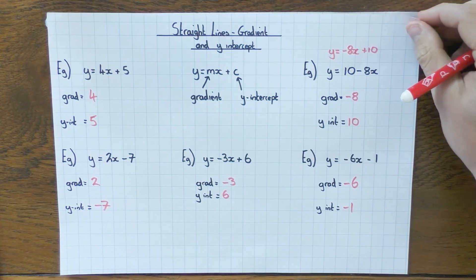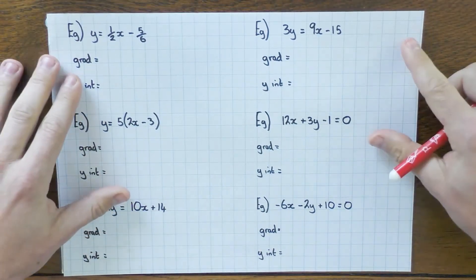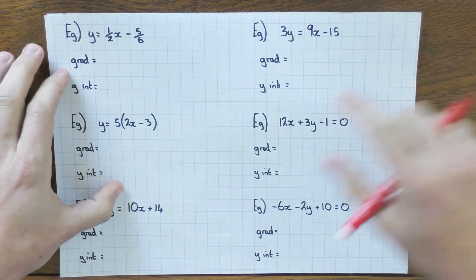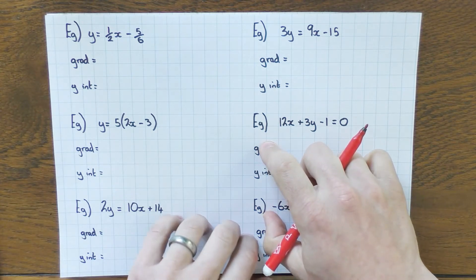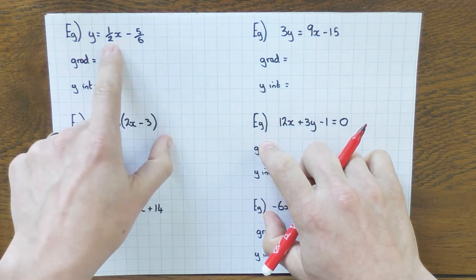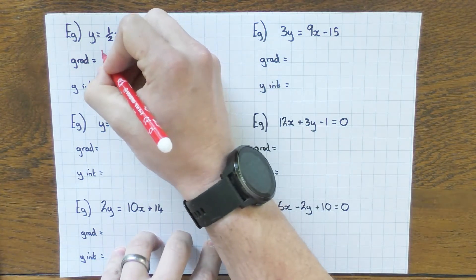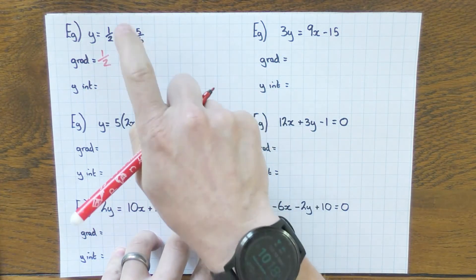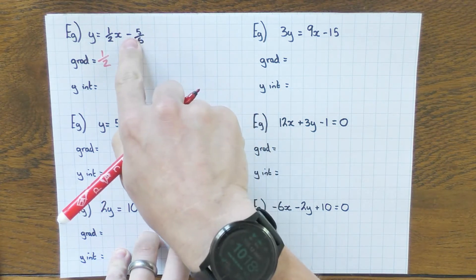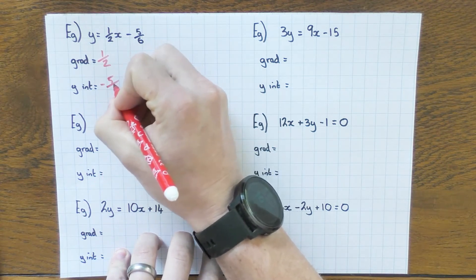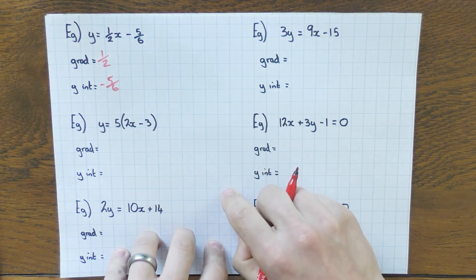Let's have a look at some slightly trickier ones, which we have here. So here I've just put some fractions in, don't let this put you off, it's exactly the same thing. What's in front of the x? Well, it's a half, so the gradient's a half. And what is the number at the back? Well, it's a fraction, so minus 5/6 must be the y-intercept. Not a problem.